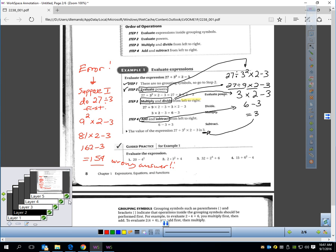Watch what happens if you make one little mistake in order. Suppose I decided to do 27 divided by 3 first. Now if I do that first, I broke a rule. I didn't do my power before my multiplying and dividing. Look what happens if I just did that first. 27 divided by 3 would be 9. Then I would square 9 and get 81. 81 times 2 is 162. Minus 3 is 159. Look at how far off my answer is from the correct answer because I made one little mistake in the order.